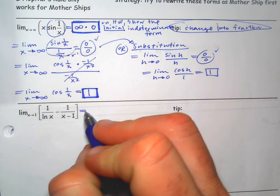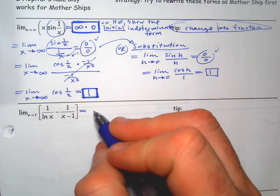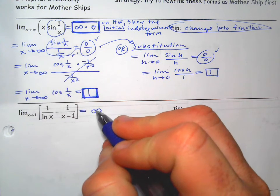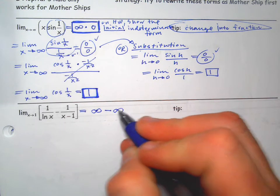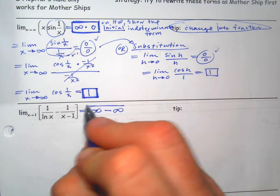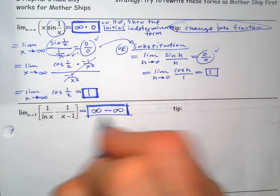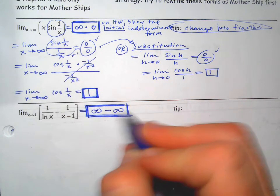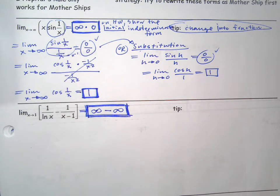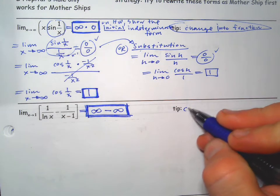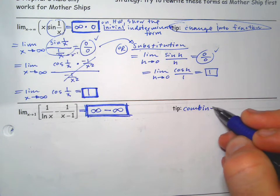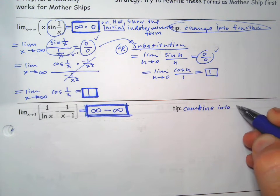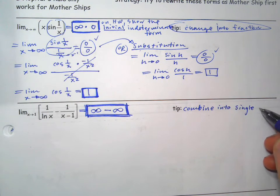This next one: the initial form is 1 over natural log of 1 equals 1 over zero, which is infinity, minus 1 over (1 minus 1) equals 1 over zero, which is infinity. So this is our initial indeterminate form: infinity minus infinity. If we get infinity minus infinity, the tip — my advice — is that usually these infinities come from fractions, and if there are two of them they're probably from two separate fractions. The strategy is to combine them into a single fraction.